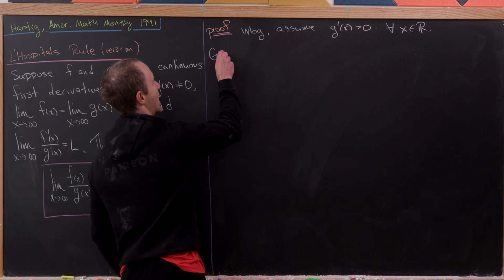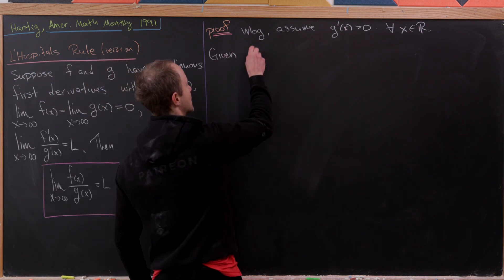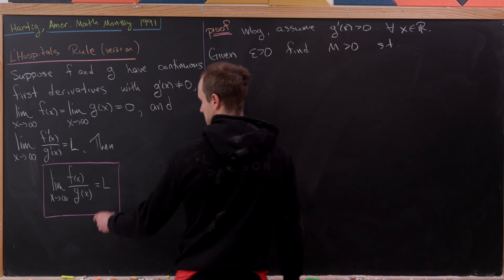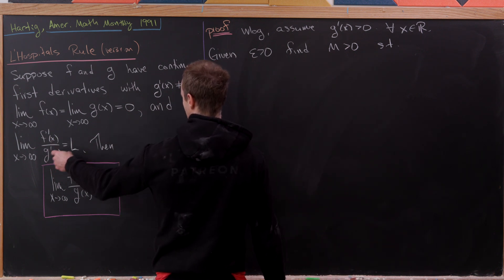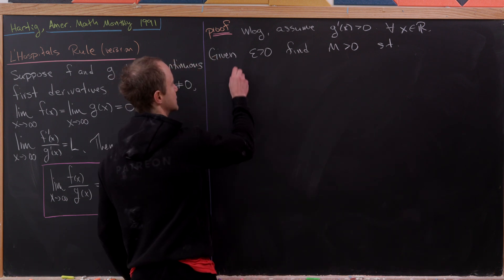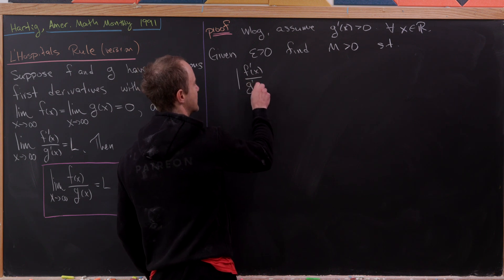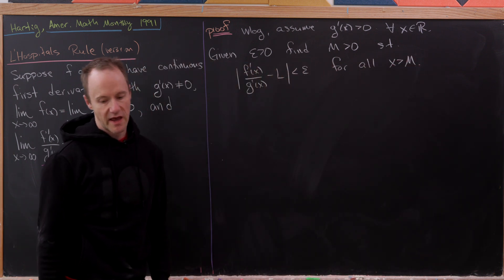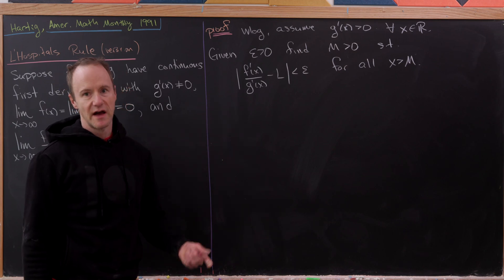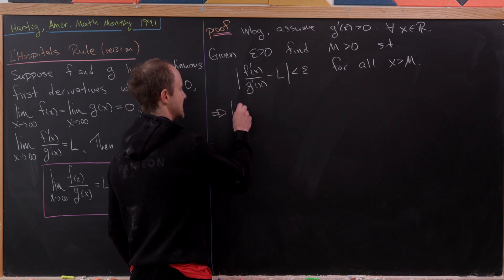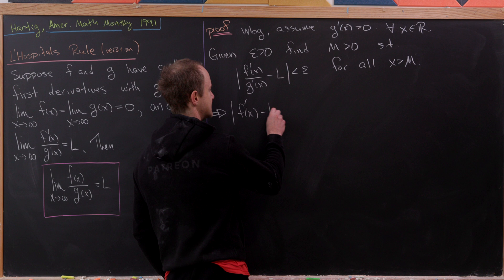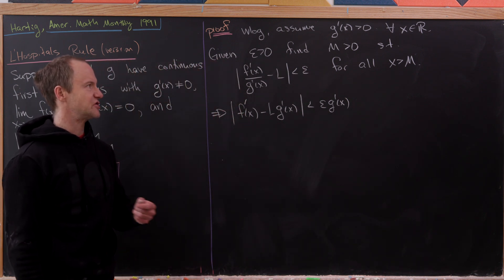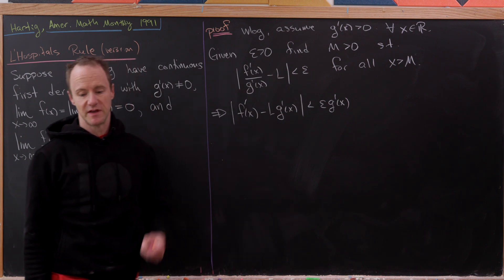Now we're ready to apply our precise definition of an infinite limit. Given epsilon greater than zero, we can find a number M greater than zero such that, applying the definition to f'/g' and L, we have |f'(x)/g'(x) − L| < epsilon for all x greater than M. We can multiply by g' to clear the denominator, giving us |f'(x) − L · g'(x)| < epsilon · g'(x). I can take g' out of the absolute value because we assumed g' is positive.